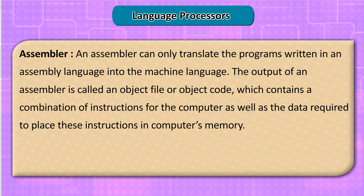Assembler: An assembler can only translate programs written in assembly language into machine language. The output of an assembler is called an object file or object code, which contains a combination of instructions for the computer as well as the data required to place these instructions in the computer's memory.